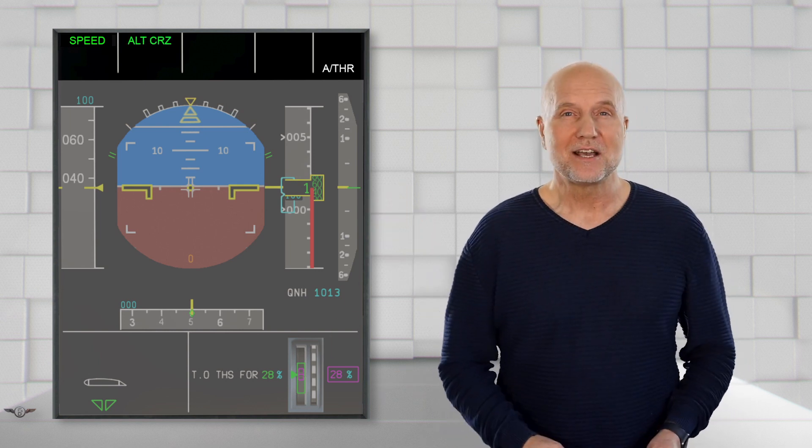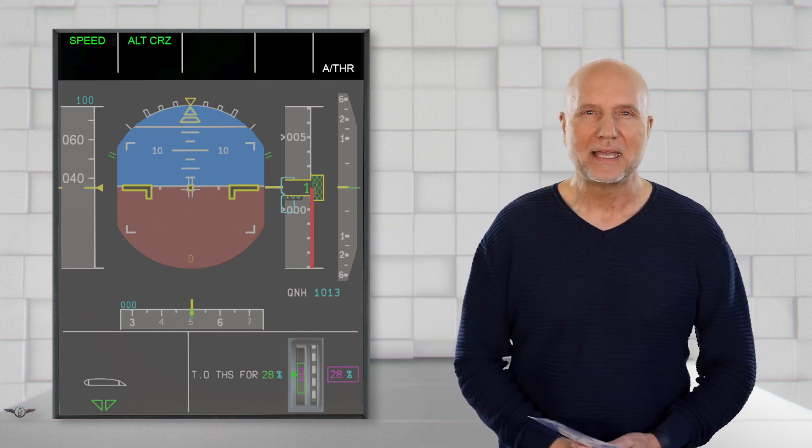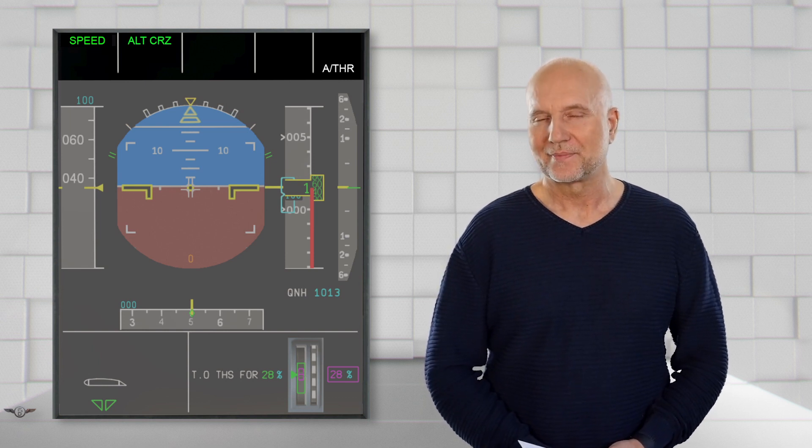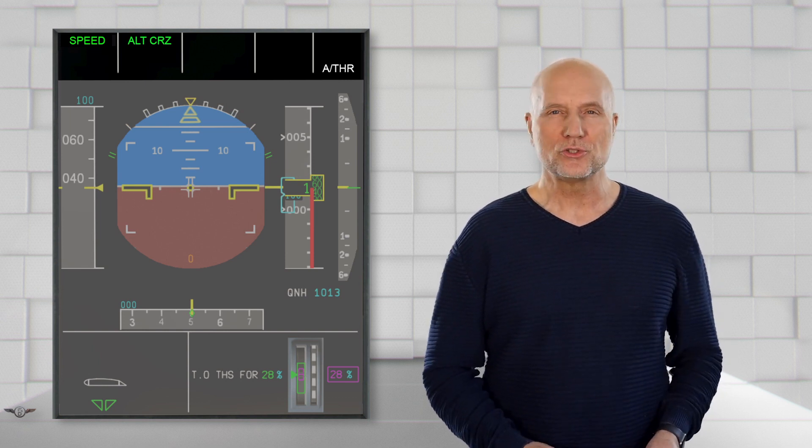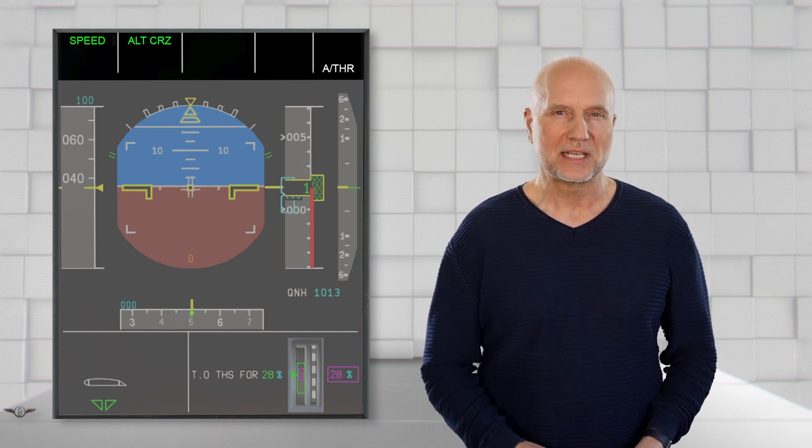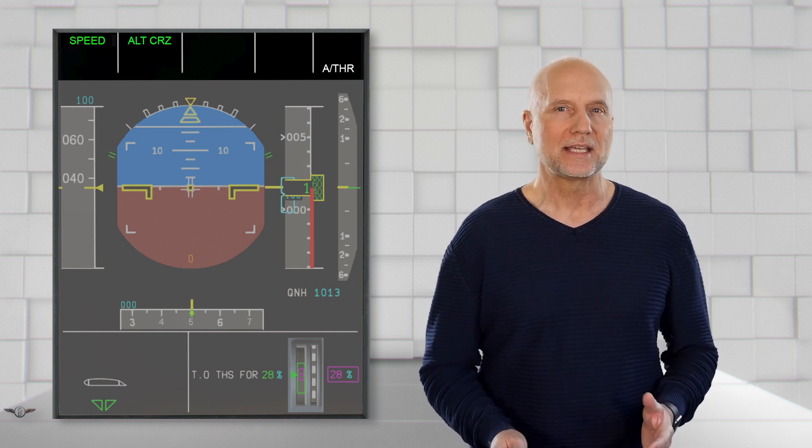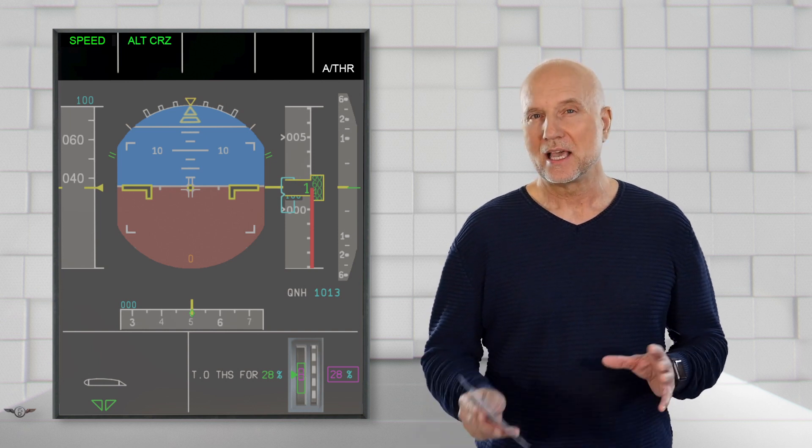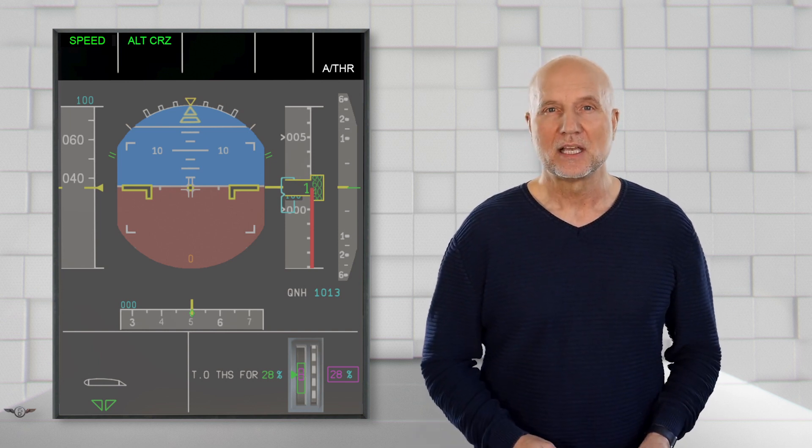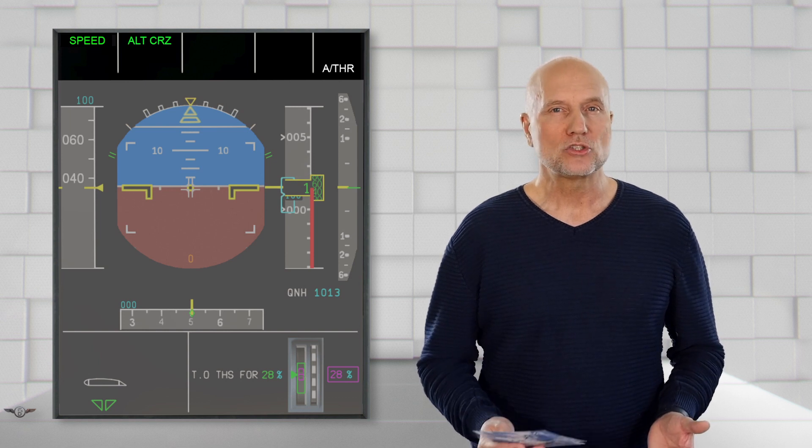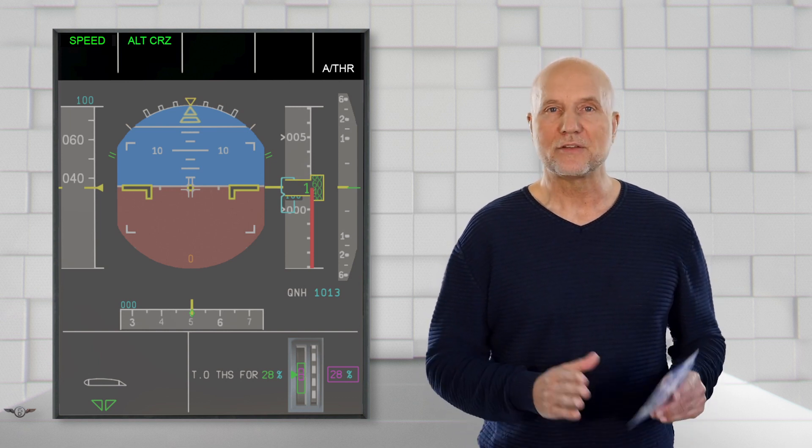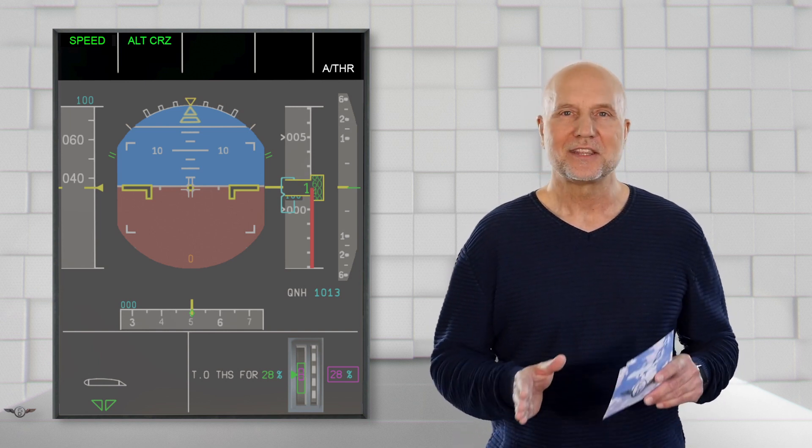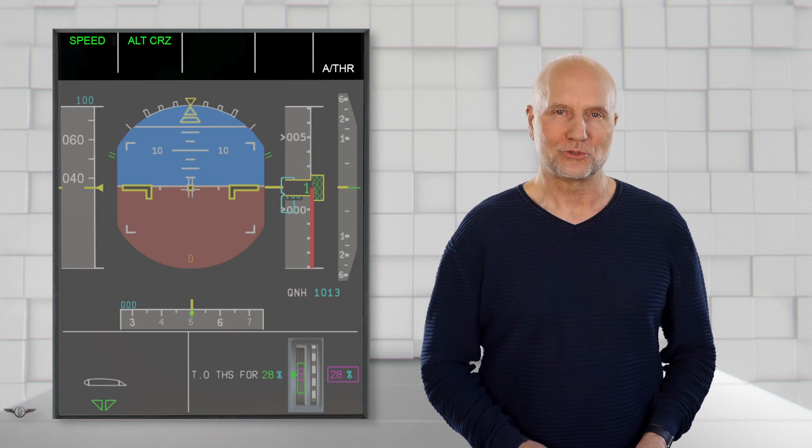Here we see a minor change on the FMA. Instead of ALT, we read ALT Cruise. Why? ALT Cruise is the cruising altitude programmed in the FMS. As long as the aircraft is flying any lower altitude selected on the AFS-CP as programmed in the FMS, the FMA displays ALT. The moment the AFS-CP selected altitude and FMS cruising altitude are the same, the FMA reads ALT Cruise.